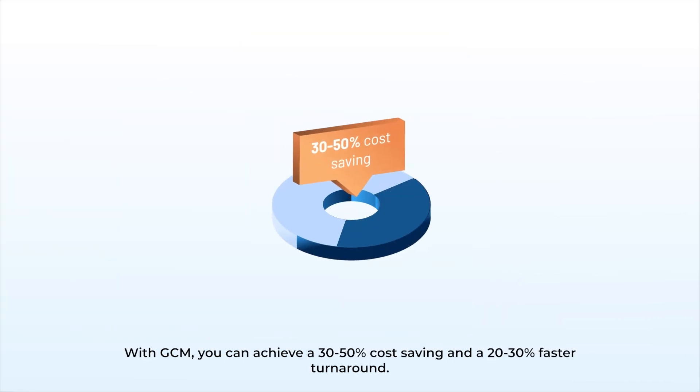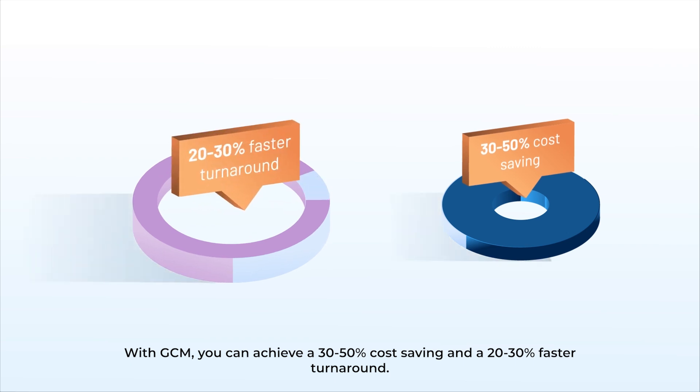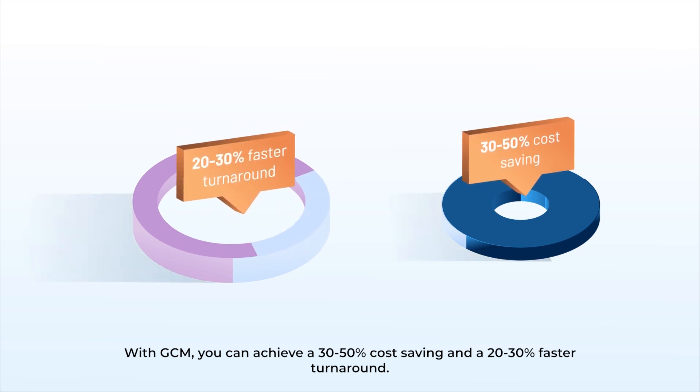With GCM, you can achieve a 30–50% cost saving and a 20–30% faster turnaround.